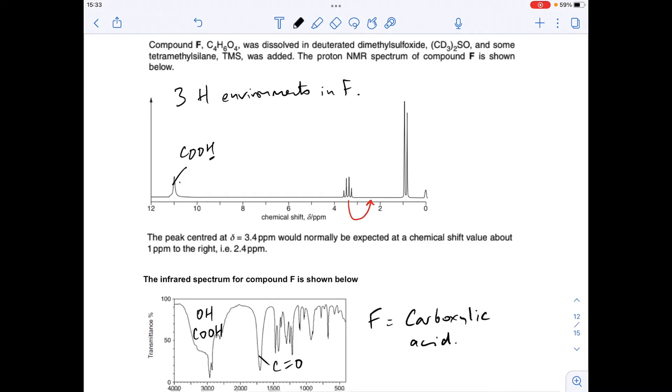So for each signal, I would say the same sort of things. I would quote the splitting pattern. We'll start with the tall one here. This is a doublet. What does that tell us? It means there's an adjacent CH, single hydrogen. So N plus 1, 1 plus 1 is 2. And the only other thing we can say is that it's an HCR environment.